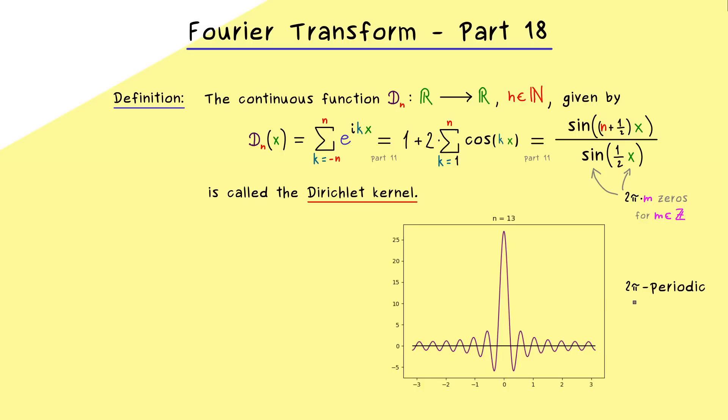This behavior is quite obvious if you look at the first or the second representation because there you see at the origin we will just add up ones. So in particular, if we send n to infinity, we don't have pointwise convergence of this sequence of functions at all.